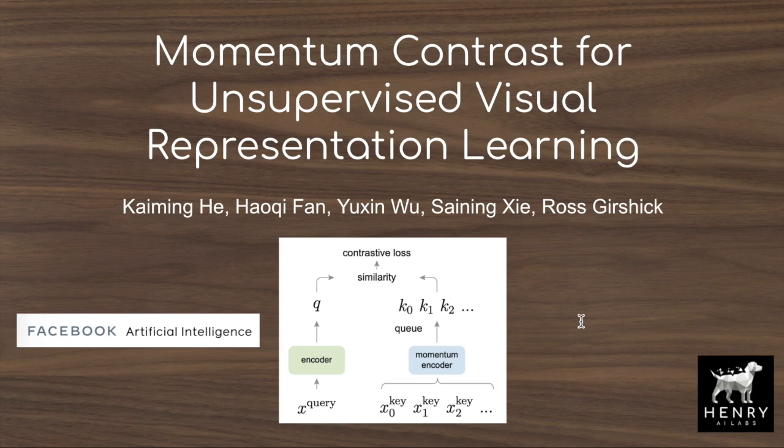MoCo V2, with extensions from Google's SimCLR framework, is the current state-of-the-art in unsupervised representation learning from images, achieving 71.2% ImageNet accuracy with a ResNet-50. This is narrowing the gap between supervised and unsupervised learning in computer vision, and powering reinforcement learning control on the DeepMind control suite from only pixel inputs in CURL from researchers at UC Berkeley.